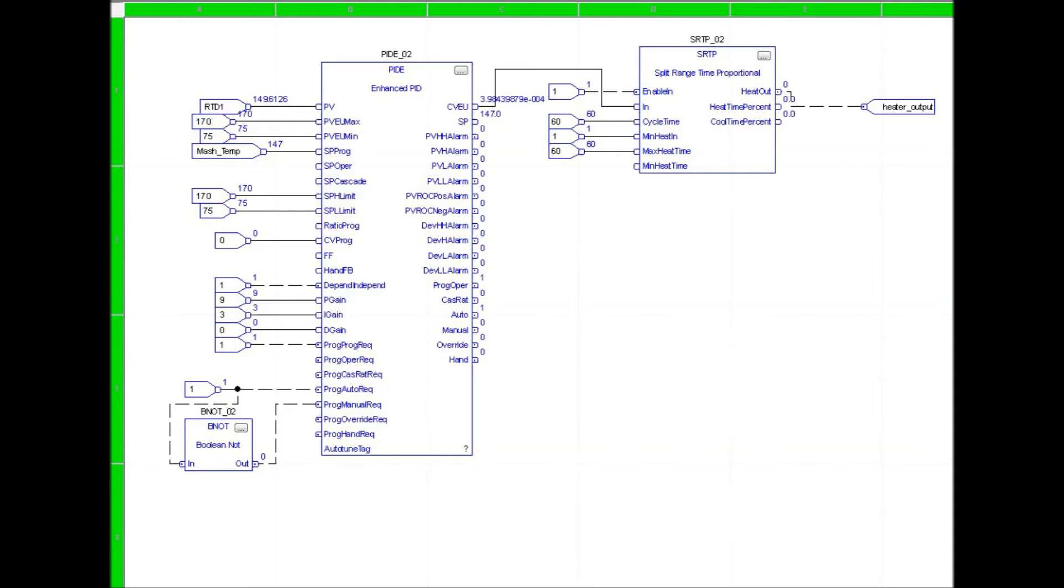Since the heating element is controlled with the solid state relay, it only has the option to be on or off. The time proportional instruction takes a percent output and changes it to a time on. For example, if the cycle time was 10 seconds and the output of the PID was 60%, the STRP instruction would send the output to the relay to switch on for 6 seconds and then off for 4 seconds.